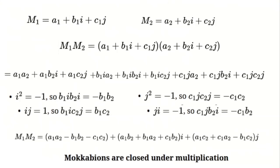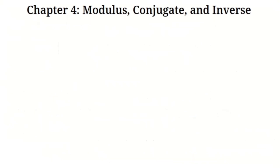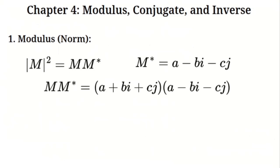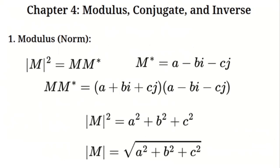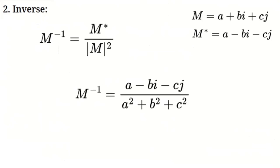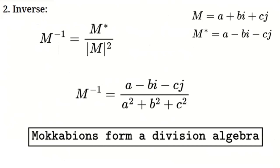This proves that Mokabians are closed under multiplication. To determine if they form a division algebra, we define the modulus: the modulus squared equals m times its conjugate. The conjugate of a + bi + cj is a − bi − cj, and multiplying m by its conjugate gives a² + b² + c². The modulus is therefore √(a² + b² + c²). The inverse is (a − bi − cj) / (a² + b² + c²). Since the modulus squared is always positive for non-zero Mokabians, they do indeed form a division algebra.